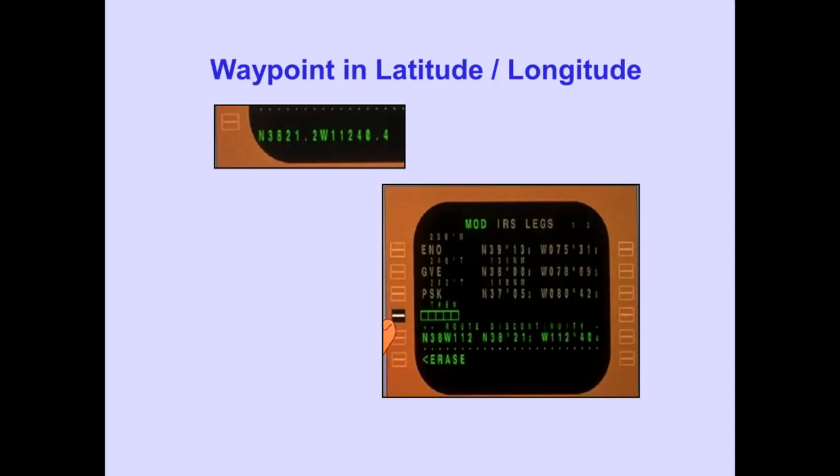The remaining waypoint courses are displayed True until they become the active waypoint. Route modification is similar to normal route modification, except all new waypoints must be entered as latitude-longitude waypoints, and the modification is only effective on the respective FMS-CDU and IRS. In this example, we placed a new latitude-longitude waypoint after PSK.